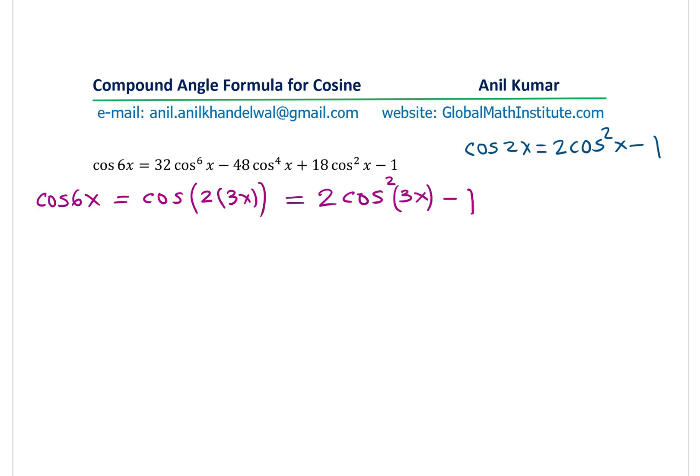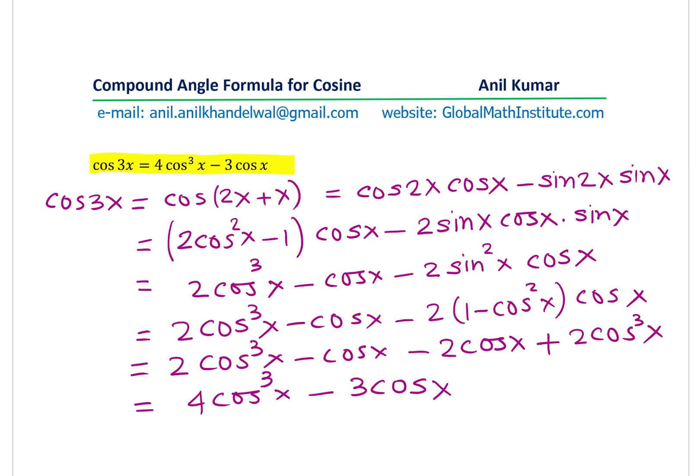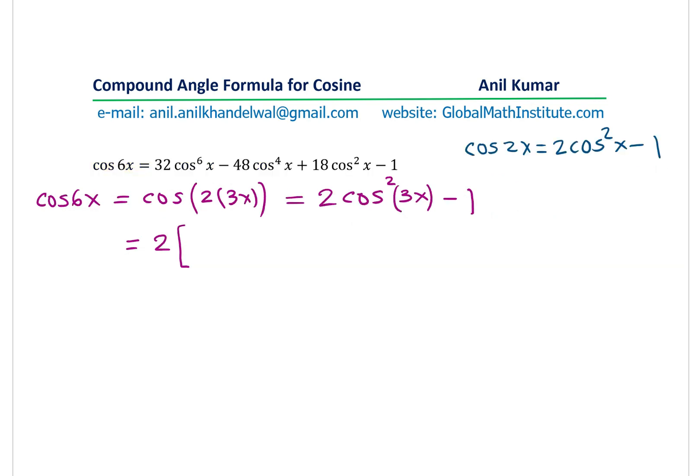Now, we remember the formula for cos 3x. So, we could write this as 2 times square of cos 3x and cos 3x formula we just derived here, which is 4 cos³ x minus 3 cos x. So, we will substitute that, 4 cos³ x minus 3 cos x, whole square minus 1.